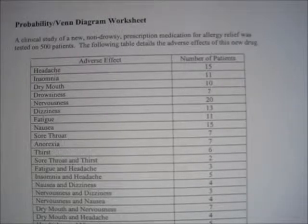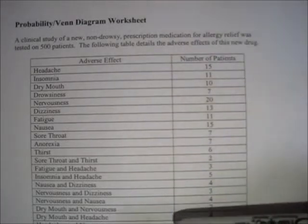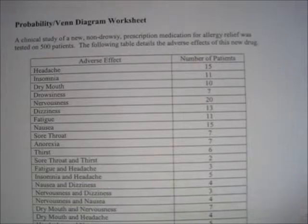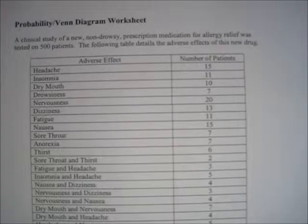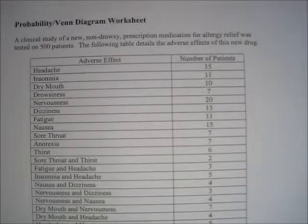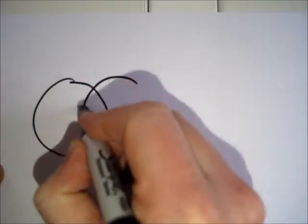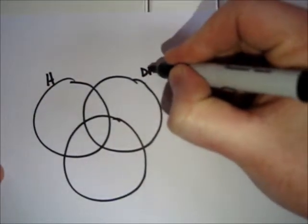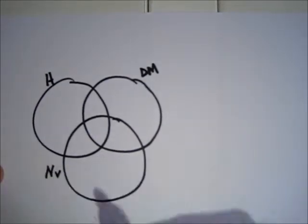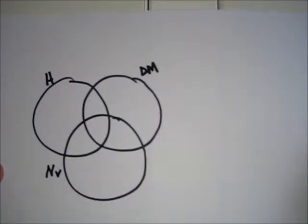This problem is similar to problems in section 2.5 of your textbook, except the ones in the textbook are much simpler in terms of the number of sets. Ours has many sets involved, more than three. But the procedure is still the same. I'm going to start at the bottom with the patients who experienced multiple adverse effects. We see that headaches, dry mouth, and nervousness — there were three patients who experienced all three of those things. So if I have a set representing each one of these side effects, there need to be three people in the triple intersection point of those sets. I'm going to draw three sets: headaches, dry mouth, and nervousness.